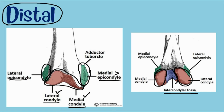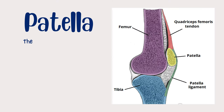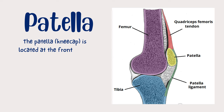The intercondylar fossa is a deep notch on the posterior surface of the femur between the two condyles. It contains two facets for attachment of intracapsular knee ligaments: the anterior cruciate ligament and the posterior cruciate ligament.